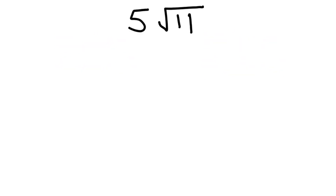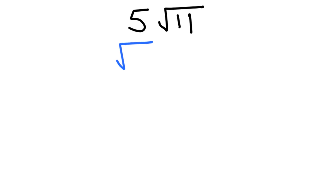Here I have a mixed radical and I want to turn it into an entire radical. I have to take this 5 and somehow get it within that root sign. What we have to do is reform this number. I know the square root of 25 is 5, so I could rewrite the number 5 as the square root of 25. Then instead of 5 times the square root of 11, it's now the square root of 25 times the square root of 11. I haven't changed anything — the value is still the same, I've just changed what that 5 looks like.